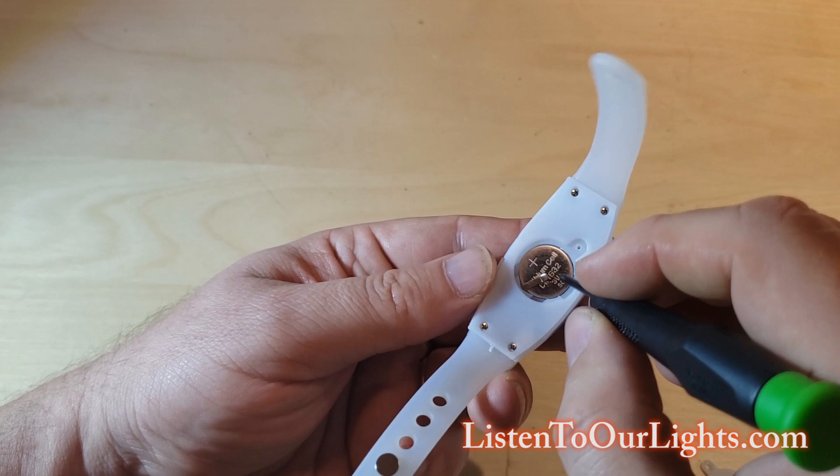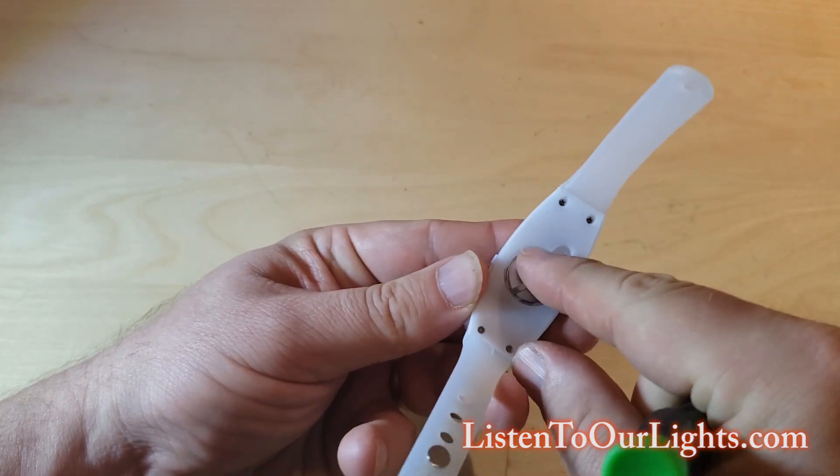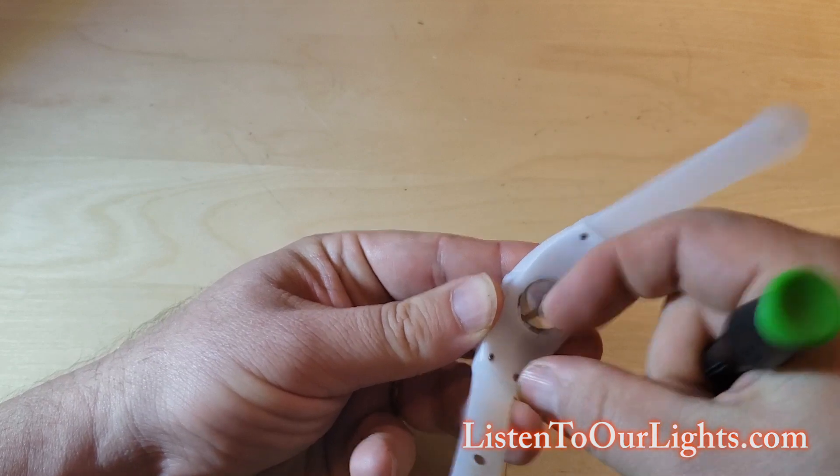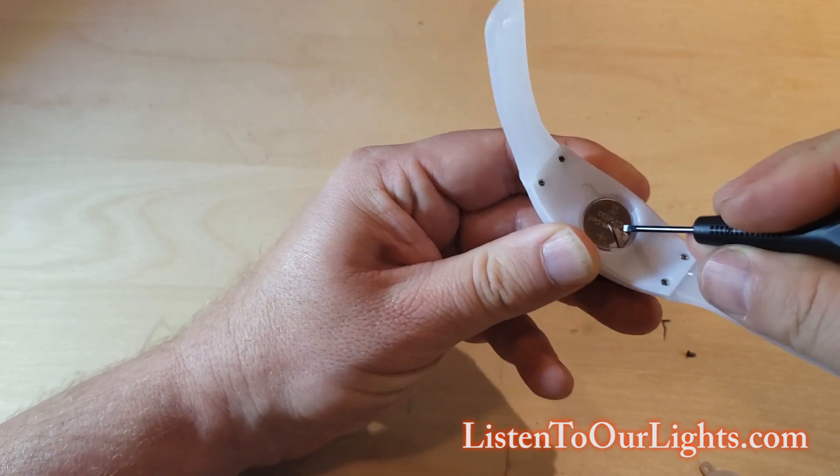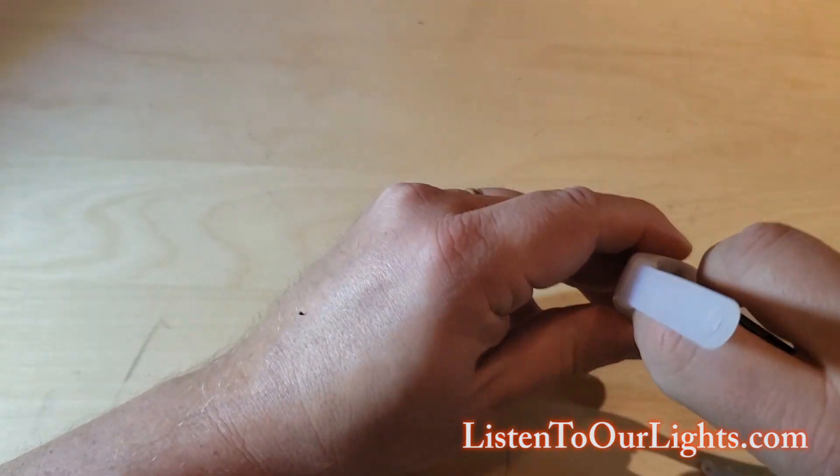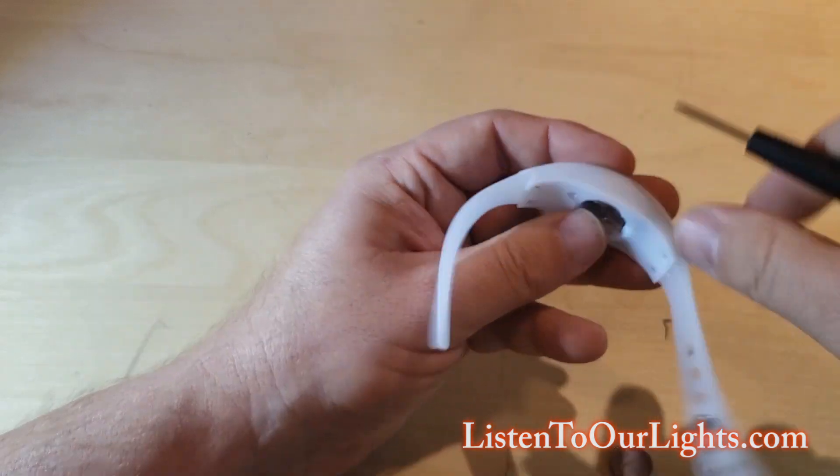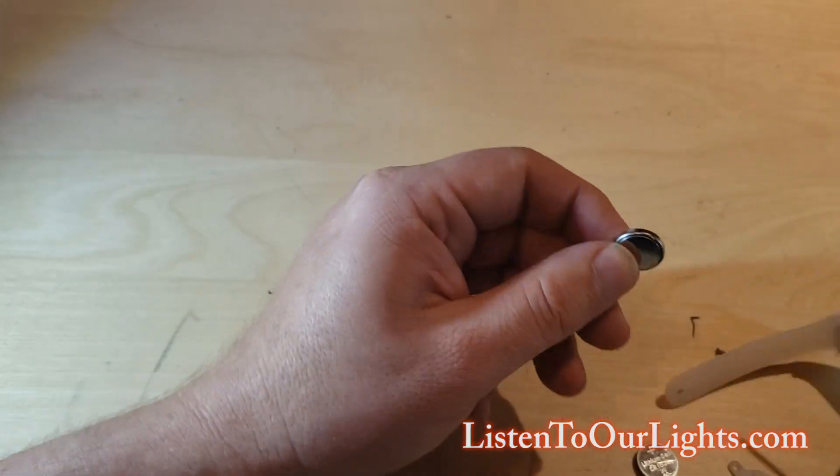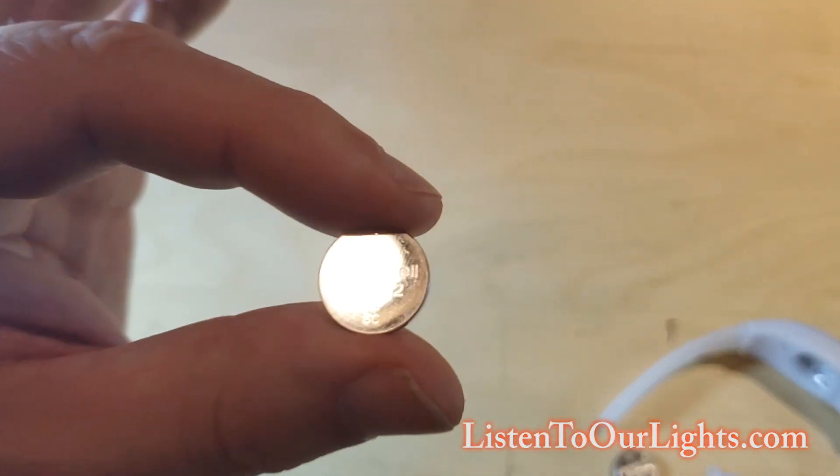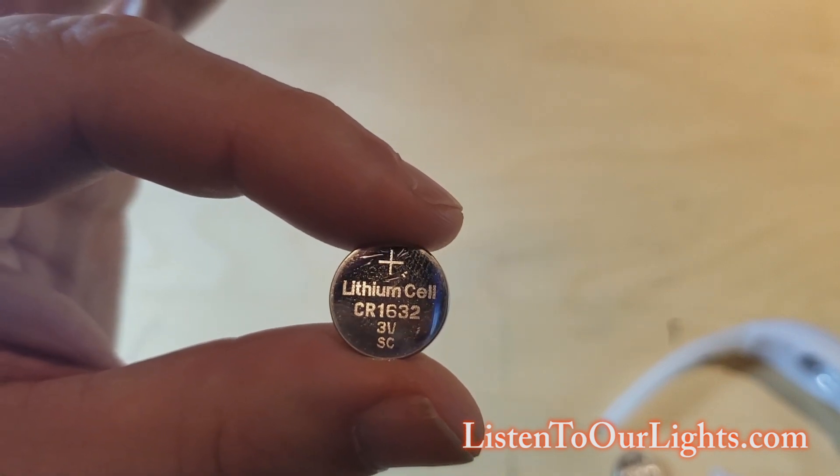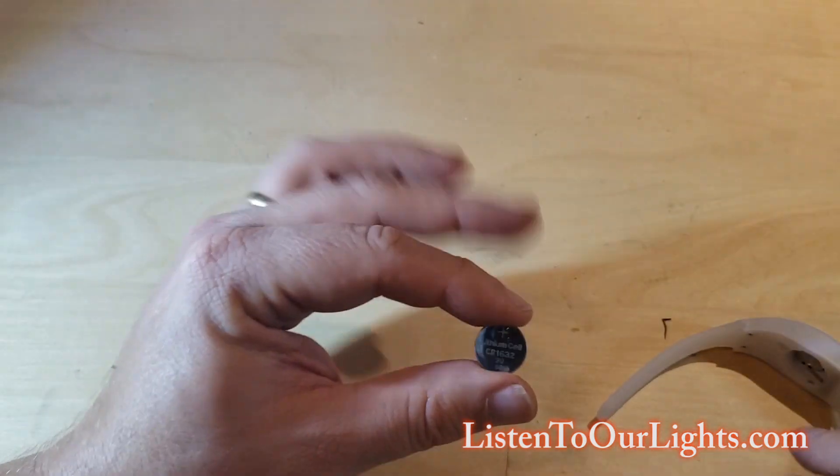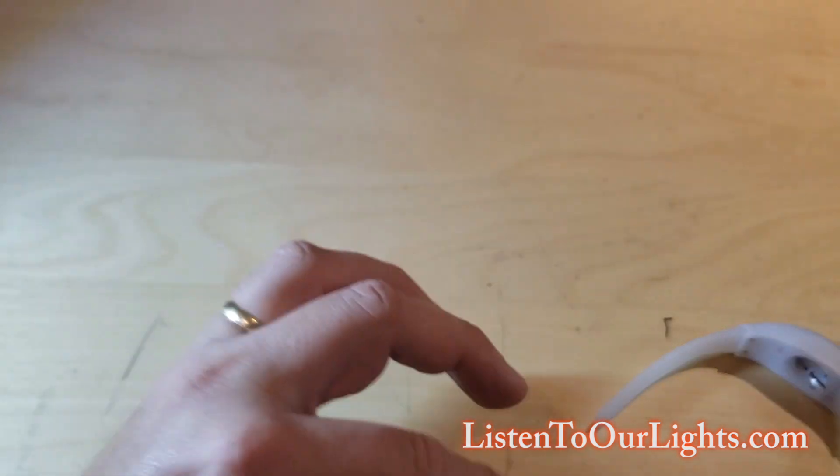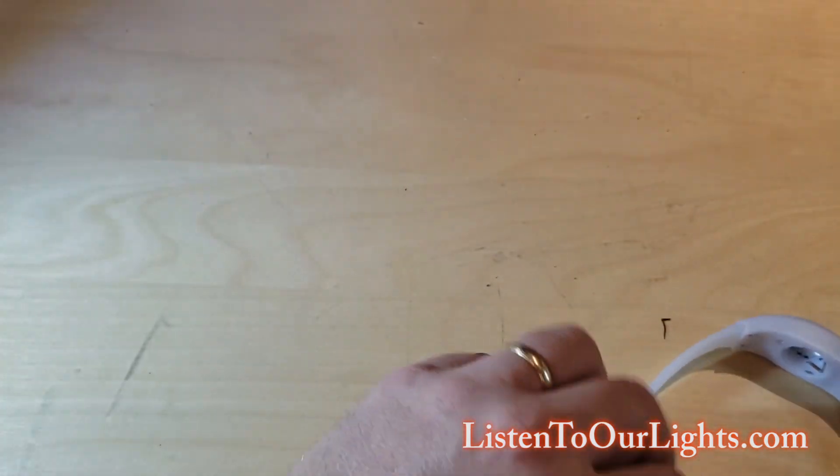So we open it up and the first thing we encounter is two lithium-cell batteries. Let me pop these guys out. There's one and the other should fall right out. Okay, so this is a CR1632 3 volt battery. Since you have two 3 volts, that means it's 6 volts that are powering this guy.